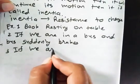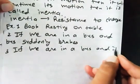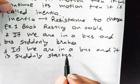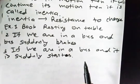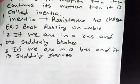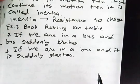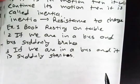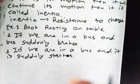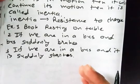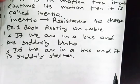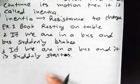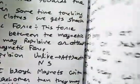Another example: if we are in a bus and it suddenly starts its motion, our upper body moves in the backward direction due to inertia — it doesn't want to change its state of rest. Our legs and feet are not moving backward because they are in direct contact with the bus seat. So only the upper body experiences inertia. That completes our discussion of Newton's First Law of Motion.